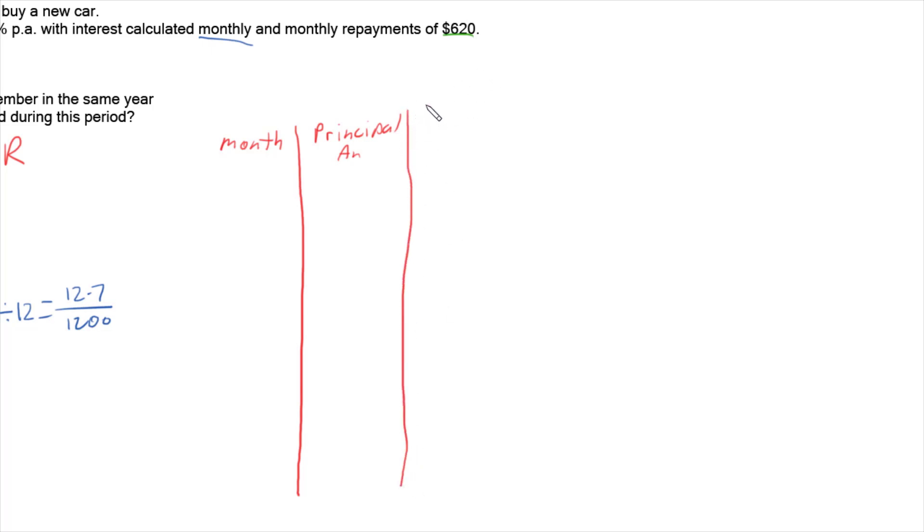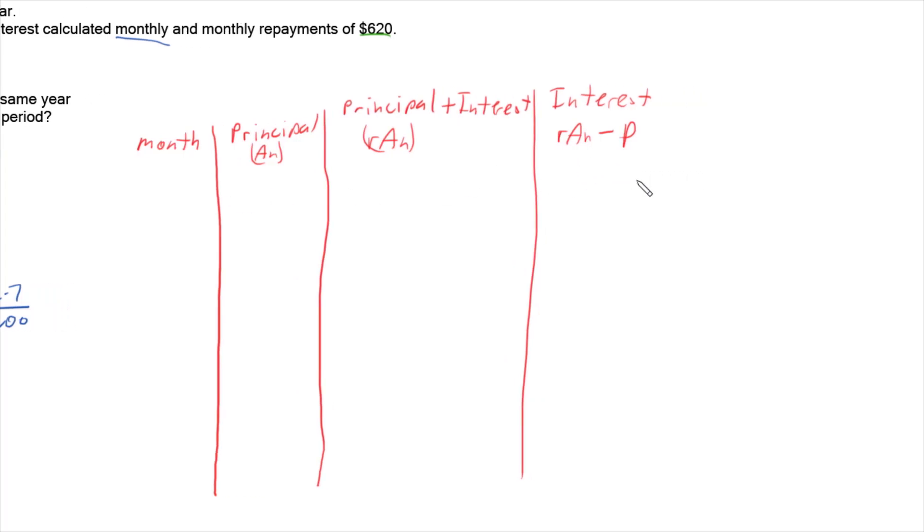We have the principal plus the interest. So we add our interest on, and that's just the r*A(n) part of the rule. And then we work out what our interest is. And if we have principal plus interest, r*A(n), then to work out the interest alone, we need to minus off our principal, A(n).